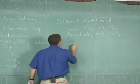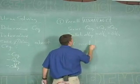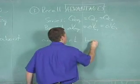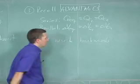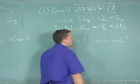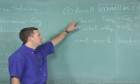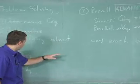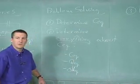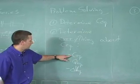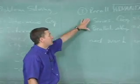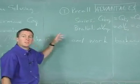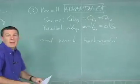Work backwards. What you're going to do is recall the advantages. You now know everything about the equivalent capacitor. You've got the equivalent capacitance, the charge on it, and the potential difference across the plates. Now take these two pieces of information and work backwards.